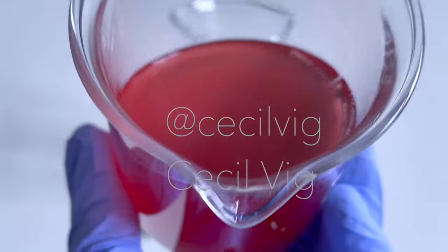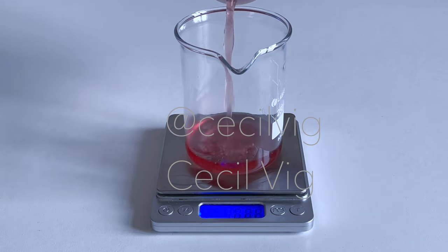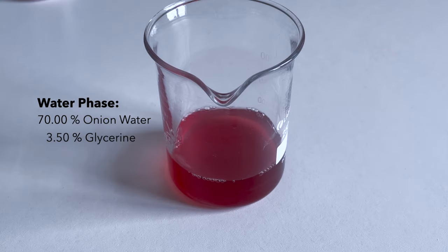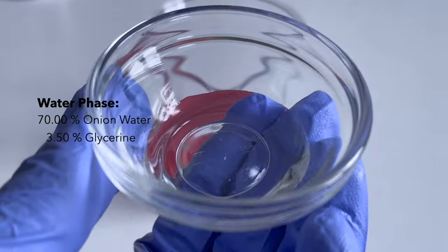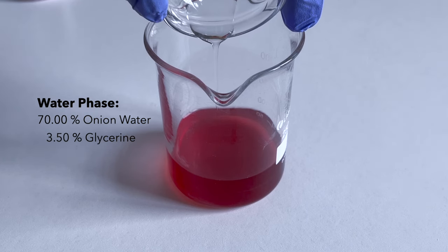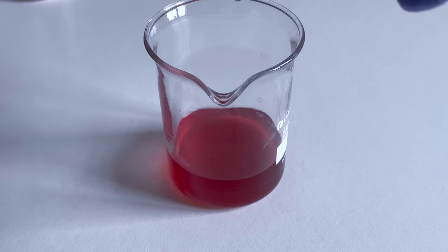And here we have the onion water. The next step is to measure the amount we need to make the hair conditioner with. I am preparing a batch of 100 grams. Make sure you put the onion water in a heat-resistant container. I add the glycerin to the onion water. I keep the beaker aside and prepare the oil phase.